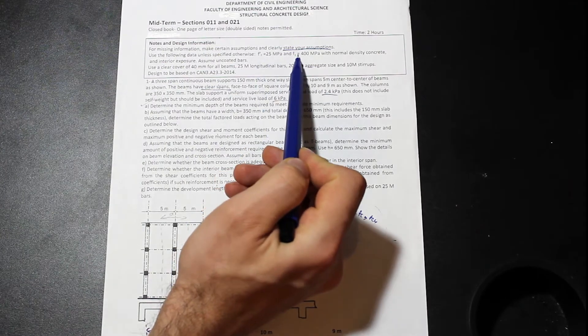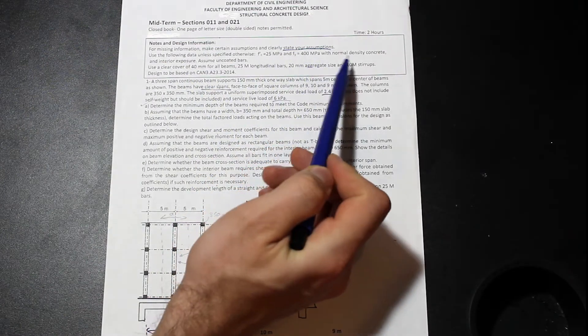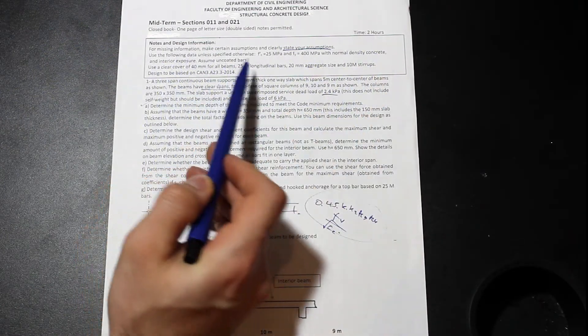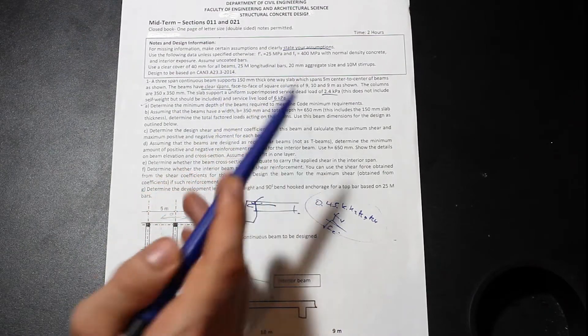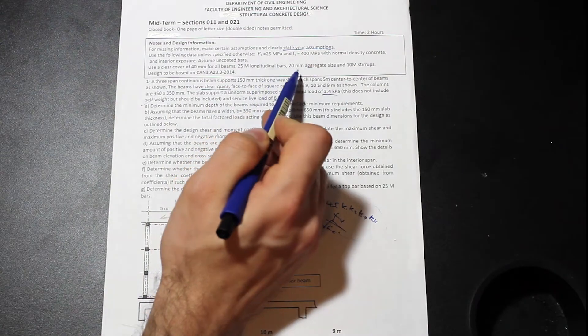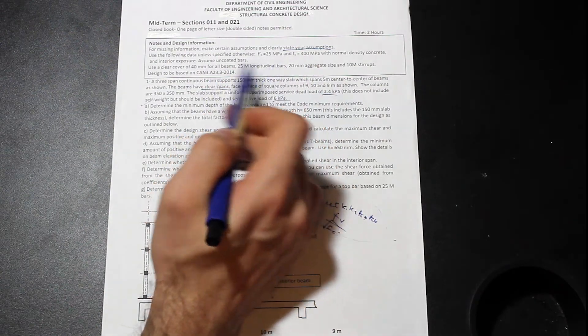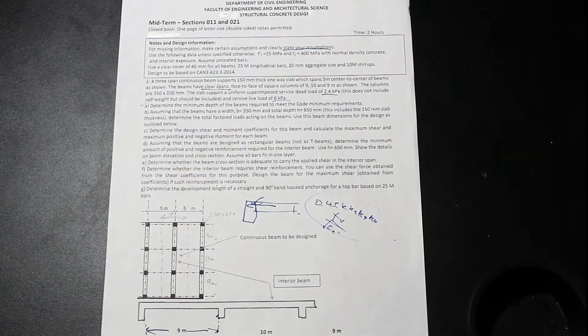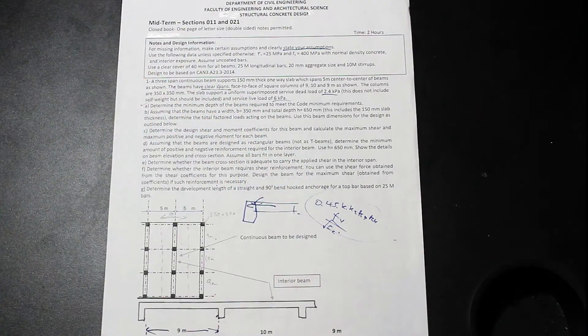You know, we're given the compressive strength of the concrete, yield strength of the rebar, normal density concrete, exposure, bars are uncoated. That's going to be important for the last part. Clear cover, and they give you the flexural and the stirrups, and the design code. Cool. So, you know, not so bad. But actually, this exam was pretty tough.